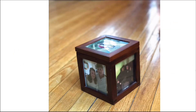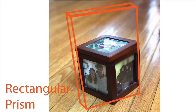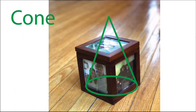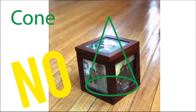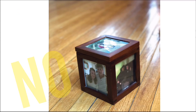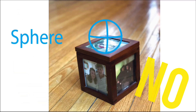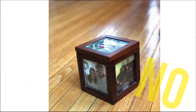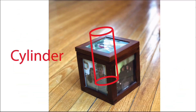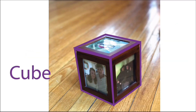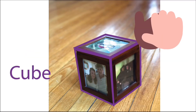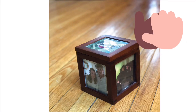Let's look at this shape. Is this one a rectangular prism? No. Is it a cone? No. Is this one a sphere? No. Is this a cylinder? Is this a cube? This is a cube! Awesome job, kindergarten.